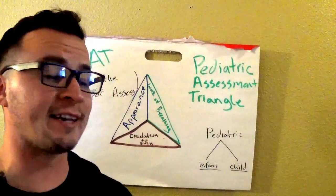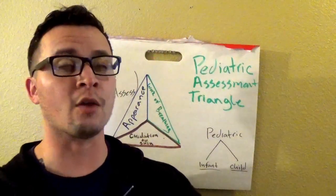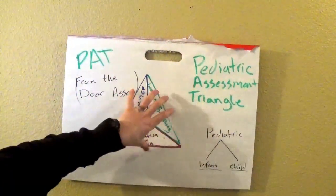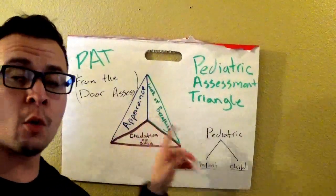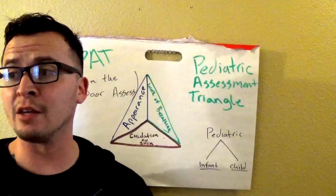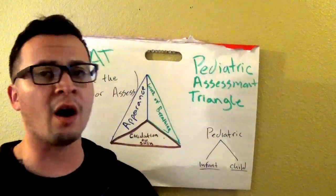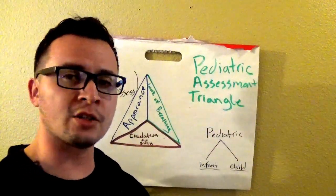It's that assessment we do before we even get to the child. We're trying to look for three things. The appearance of the child: how do they look? As you're approaching the child before you even get there, are they tracking you? Are they active, messing around like a normal kid would?